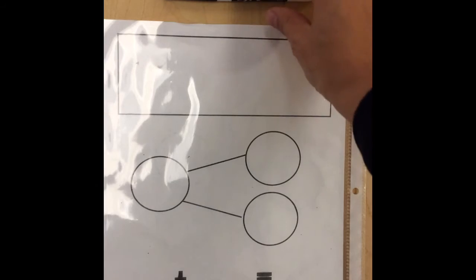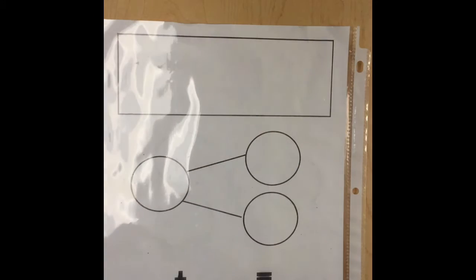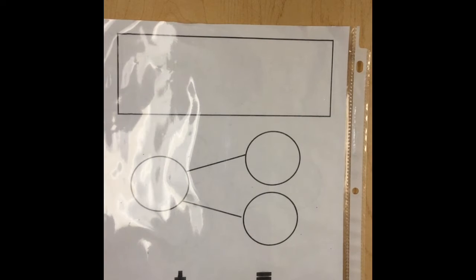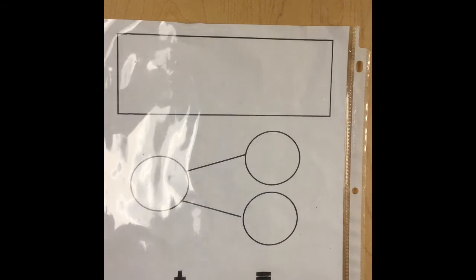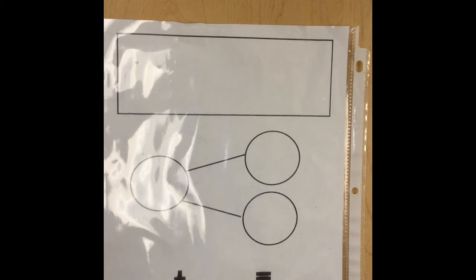You can either draw the problem or show it with your counters. Listen to the first problem. A farmer planted six seeds on Wednesday and another four seeds on Thursday. How many seeds did he plant total? I'll read that again. A farmer planted six seeds on Wednesday and another four seeds on Thursday. How many seeds did he plant total?